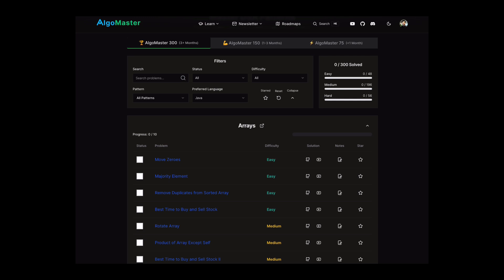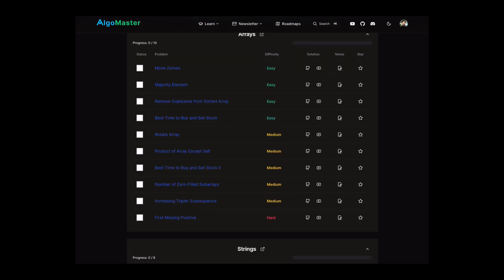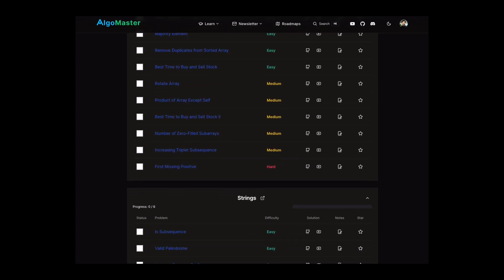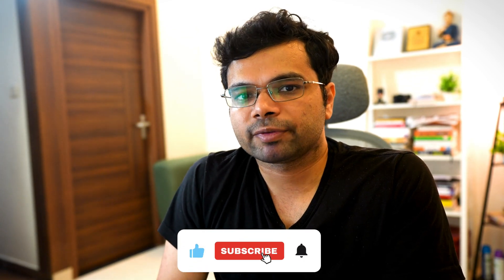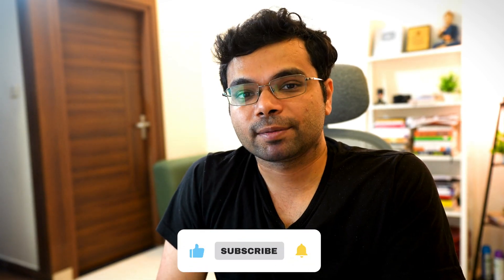I hope this video gave you a good introduction to Big O notation and how to measure time and space complexity of your code. The best way to get better at Big O is simple. Start analyzing the time and space complexity of every problem you solve. It will quickly become second nature and you will feel much more confident explaining it in interviews. If you are looking for a curated list of LeetCode problems organized by the most commonly asked patterns, do check out algomaster.io. You can watch my full DSA LeetCode patterns playlist here. Make sure to subscribe so you don't miss my future videos. Thanks for watching and I will see you in the next one.